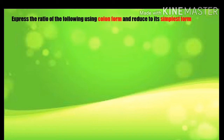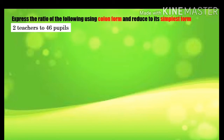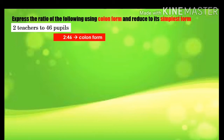Express the ratio of the following using colon form and reduce to its simplest form. First example: 2 teachers to 46 pupils. What is the colon form? 2 is to 46 is the colon form. What is its simplest form? 1 is to 23.